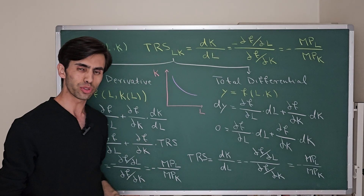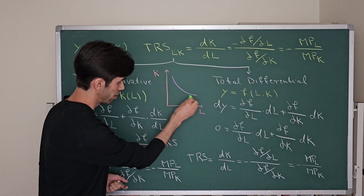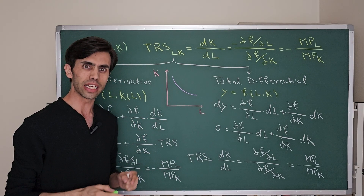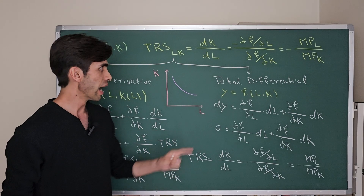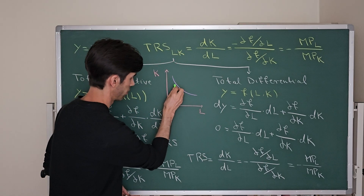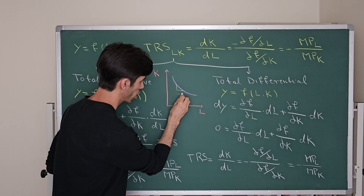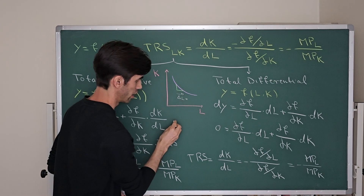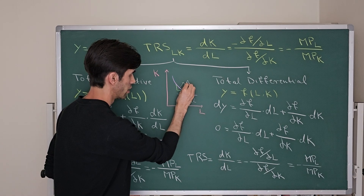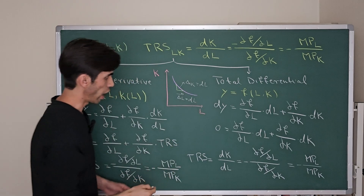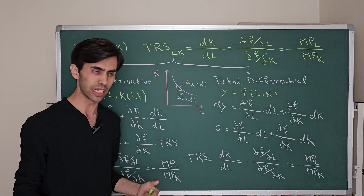TRS or Technical Rate of Substitution is the slope of an isoquant. An isoquant is the curve that shows all combinations of input bundles that produce exactly the same amount of output. The slope of the isoquant shows that we are using this much more labor, delta L or dL, and we are giving up this much capital.